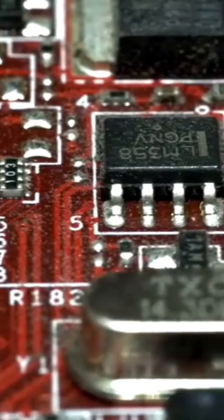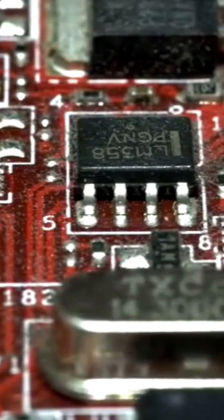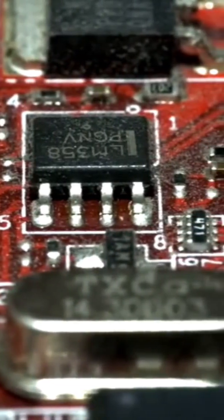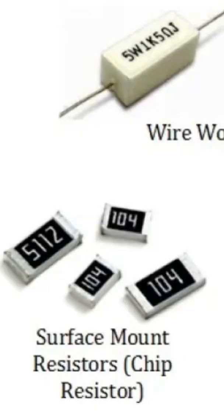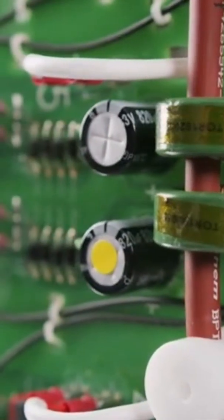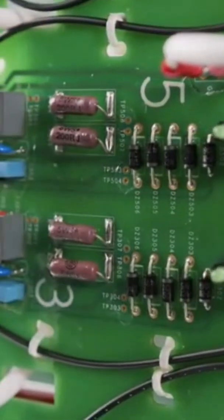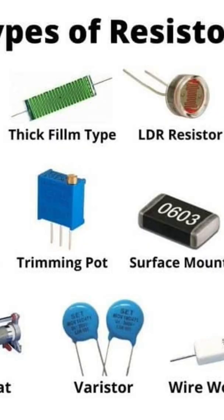Resistors serve many purposes in circuits. They are commonly used to limit current, divide voltage, adjust signal levels, and protect sensitive components. For example, in digital circuits, pull-up or pull-down resistors ensure stable logic states when no input signal is present. In addition, resistors play a role in filtering, amplifying, and shaping signals within analog circuits.